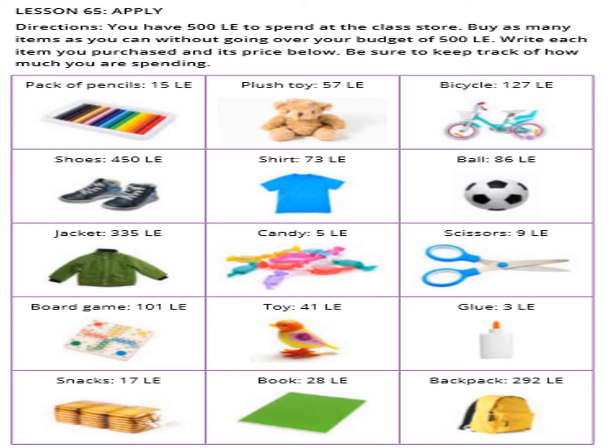Now open your school book, Lesson 65 activity. You have 500 pounds to spend at a class store. Buy as many items as you can without going over your budget of 500 pounds. Write each item you purchase and its price. Items available: pack of pencils 15 pounds, plush toy 57 pounds, bicycle 127 pounds, pair of shoes 450 pounds, shirt 73 pounds, pole 86 pounds, jacket 335 pounds, candy 5 pounds.